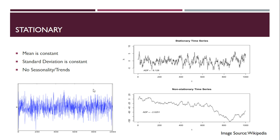The next concept is stationarity. When we call data stationary, it means the mean is constant, the standard deviation is constant, and there is no seasonality or trend. The first two properties are the most important. Looking at the stationary time series graph on top, the data fluctuates but is centered around its mean at zero, and the standard deviation is roughly constant. There's no clear positive or negative trend visible.